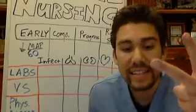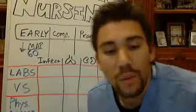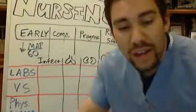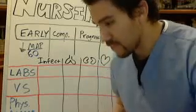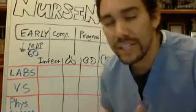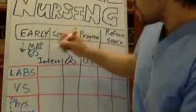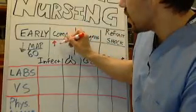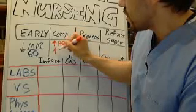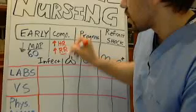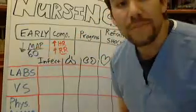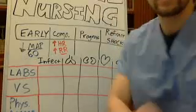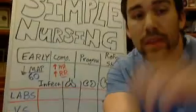The second phase involves compensatory mechanisms. As with any type of shock, your body tries to compensate for this decreased resistance by increasing heart rate and increasing respirations, because we're trying to get more oxygen when we don't have enough perfusion going around the body. That's the second phase — the body tries to compensate. The third phase is called the progressive stage.